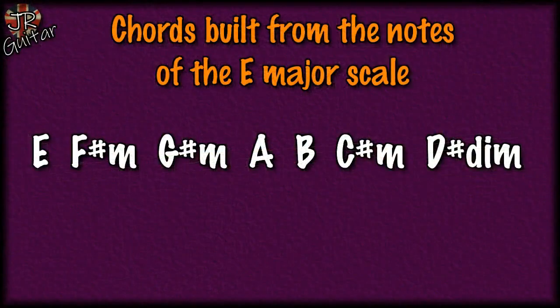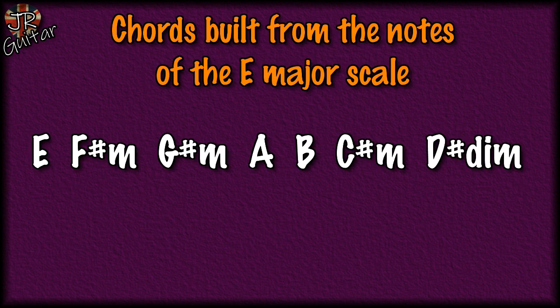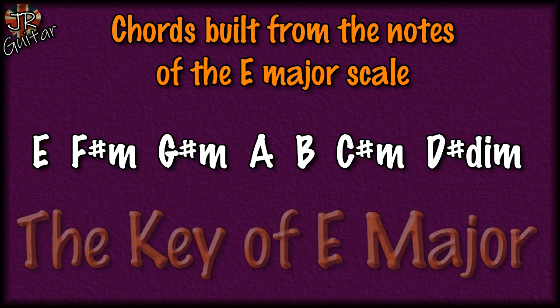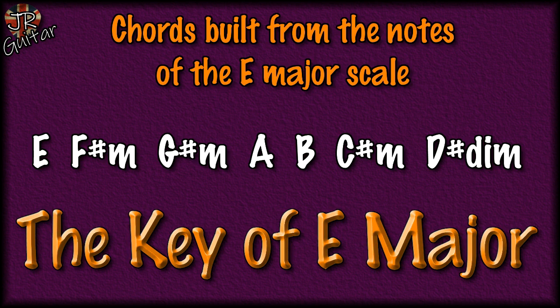To recap, the chords we built from the notes of the E major scale are: E major, F# minor, G# minor, A major, B major, C# minor, and D# diminished. Collectively, these are known as the key of E major, and here they are demonstrated all together.